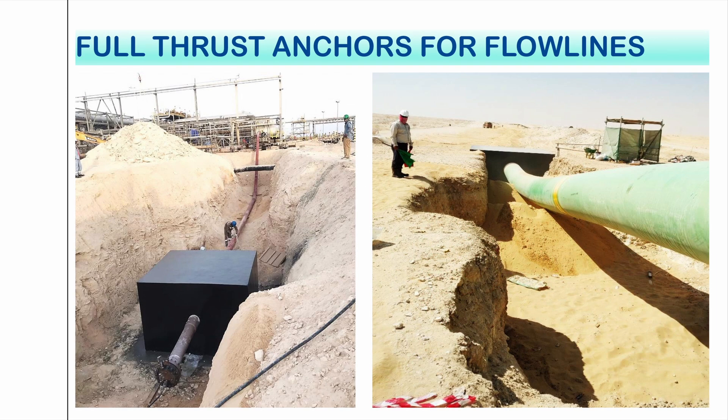Here are actual photos from site, from my previous projects, to see how a full thrust anchor or FTA looks like. The black color is the underground coating to protect the concrete — this is underground paint. You can see the photo on the left.